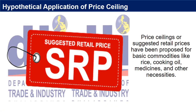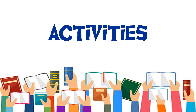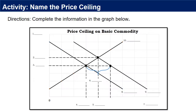Price ceilings as suggested retail prices have been proposed for basic commodities like rice, cooking oil, medicines, and other necessities. Temporary price ceilings are evident during a state of emergencies and calamities. For your activity, please read the directions. You may answer this after watching the video.